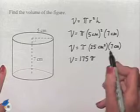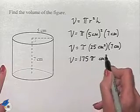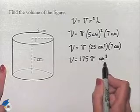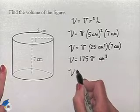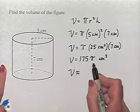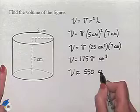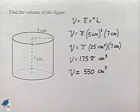And then we have square centimeters times centimeters, which is going to be cubic centimeters. So the exact value is 175 pi cubic centimeters. We can approximate that by substituting for pi with an approximate value to come up with 550 cubic centimeters as our result.